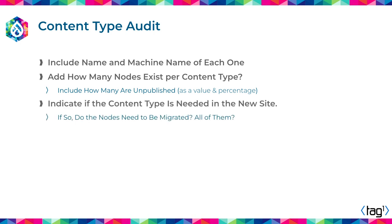For every content type, indicate if it needs to be migrated, and if so, do you need all the content? We have worked with many organizations that say, we don't really need 10 years of content — we just need information going forward. So we create the content type but drop the content itself. Or they say, I only care about the last three years of content. Have those conversations between developers and stakeholders so that you can determine what is going to be migrated in the end.